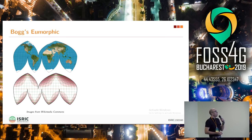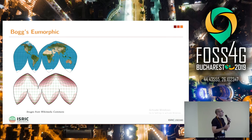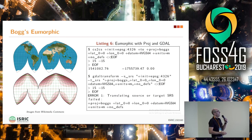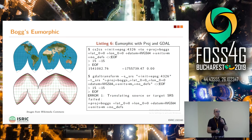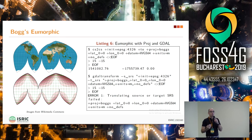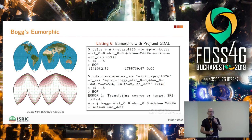Moving forward through the 20th century to another similar projection from the 1920s — the Eumorphic, developed by Mr. Bogg. Things start to go wrong here. CS2CS, the PROJ command-line tool, can pretty much deal with it, but GDAL complains. Why? Because GDAL requires any projection to be implemented both in the direct and the inverse way. In the case of the Eumorphic, the inverse is not implemented, so GDAL cannot use it.